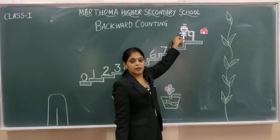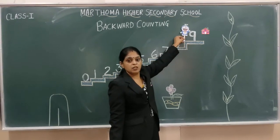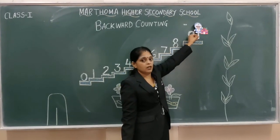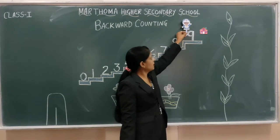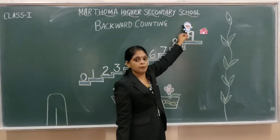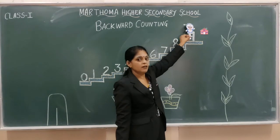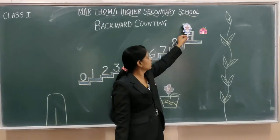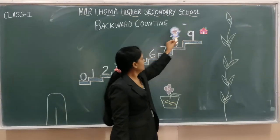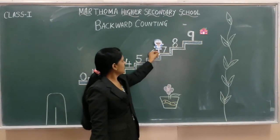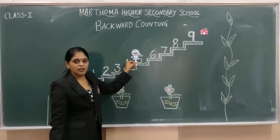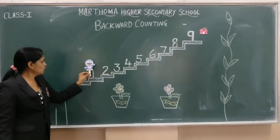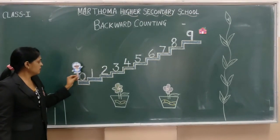Suddenly, he felt very thirsty. So he went inside his house to drink water. Again, he came back and he started counting from number 9 — bigger number to smaller number: 9, 8, 7, 6, 5, 4, 3, 2, 1, 0.